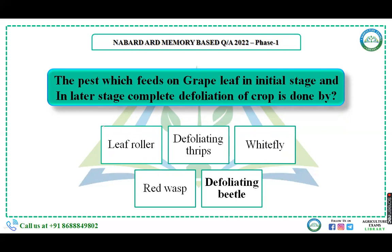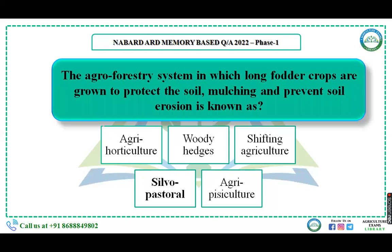The insect that feeds on grape leaf in the initial stage and in a later stage causes complete defoliation of the crop — the right answer is defoliating beetle. The agroforestry system in which long fodder crops are grown to protect the soil through mulching and prevent soil erosion, involving both fodder and tree plants, is silvopasture — the production of woody plants combined with mass pasture.